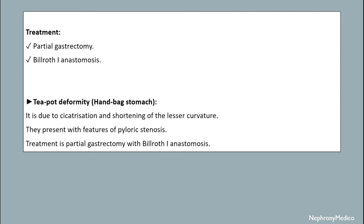Tipped deformity is due to cicatrization and shortening of the lesser curvature, which presents with features of pyloric stenosis. Treatment is partial gastrectomy with Billroth-1 anastomosis.